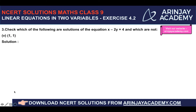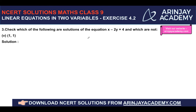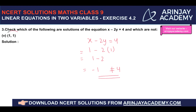For (1, 1): substituting x equals 1 and y equals 1 into x minus 2y equals 4 gives 1 minus 2 into 1, which is minus 1. Since minus 1 is not equal to 4, (1, 1) is not a solution of the linear equation x minus 2y equals 4.